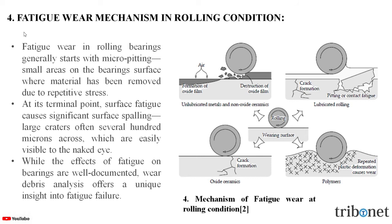Now let us understand fatigue wear mechanism in rolling conditions. Fatigue wear in rolling bearings generally starts with micro pitting — small areas on the bearing surface where material has been removed due to repetitive stress. At its terminal point, surface fatigue causes significant surface spalling: large craters often several hundred microns across, which are easily visible to the naked eye.